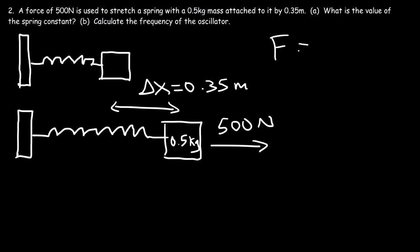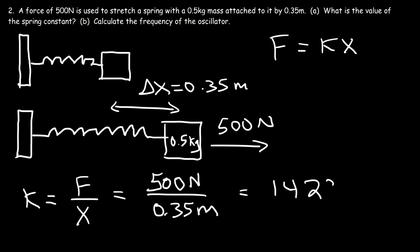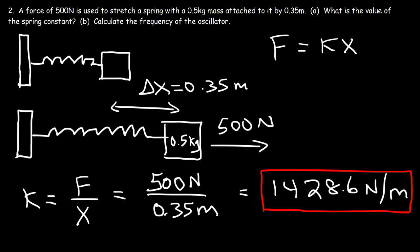We know that the force is equal to kx based on Hooke's law. So the spring constant k is the ratio between the applied force and the amount that the spring changes length. So it's going to be 500 newtons divided by 0.35 meters, which gives 1428.6 newtons per meter. That's how you calculate the spring constant — it's simply the force divided by the change in length.